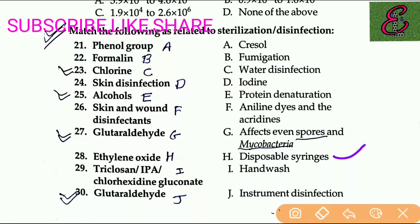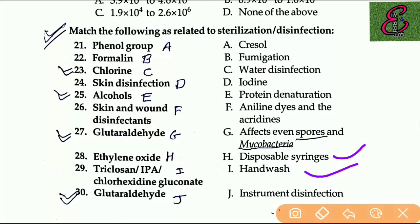Question number twenty-nine: triclosan / IPA / chlorhexidine gluconate — the answer is hand wash. Question number thirty: glutaraldehyde — the answer is instrument disinfection.